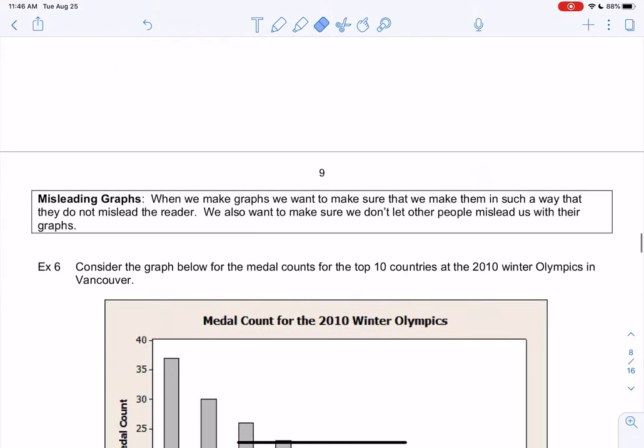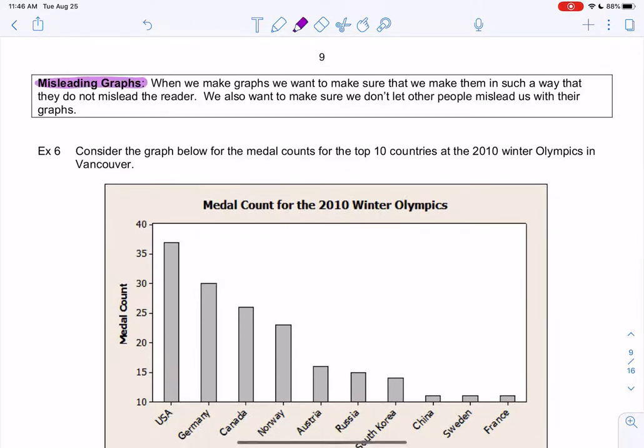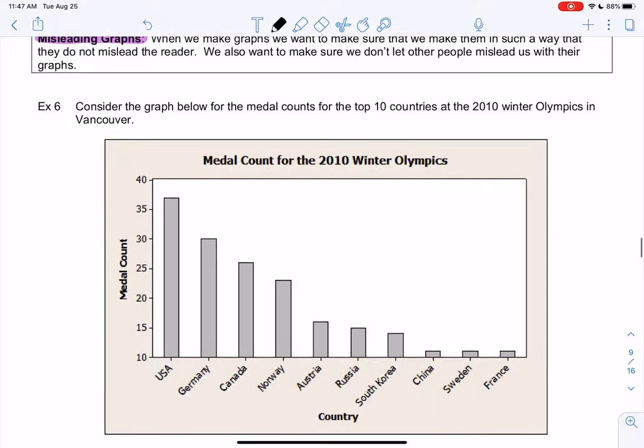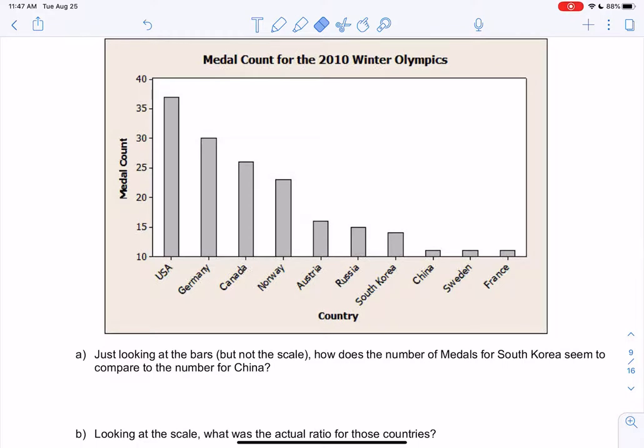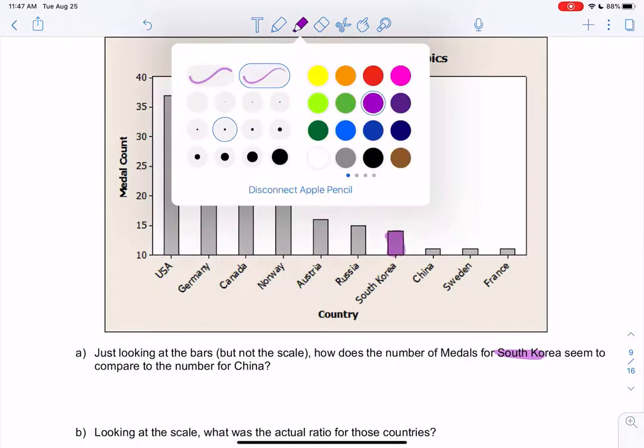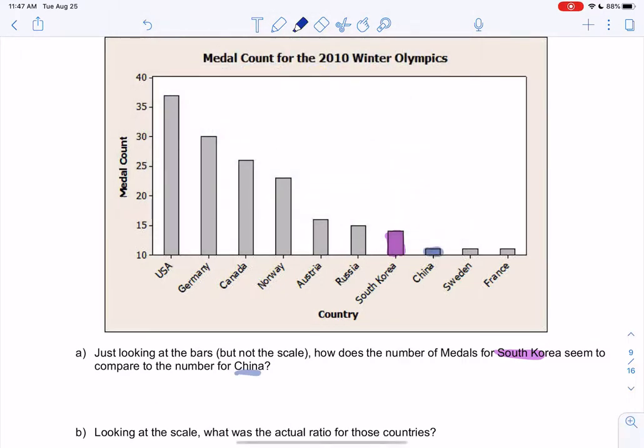So I keep talking about things that are misleading. So let's go more into that. When we make graphs, we want to make sure that we make them in such a way that they do not mislead the reader. And we also don't want to let other people mislead us. So if you look on the internet, you can find so many bad graphs that are really, really misleading. So this one below is actually called a misleading graph. So let's figure out why. We're looking at the top 20 countries in the 2010 Olympics in Vancouver. We have the country and we have the medal count. So medal count would be like frequency, number of wins. So let's just look really quickly, and we're going to compare South Korea, which is this one, to China, which is this one.